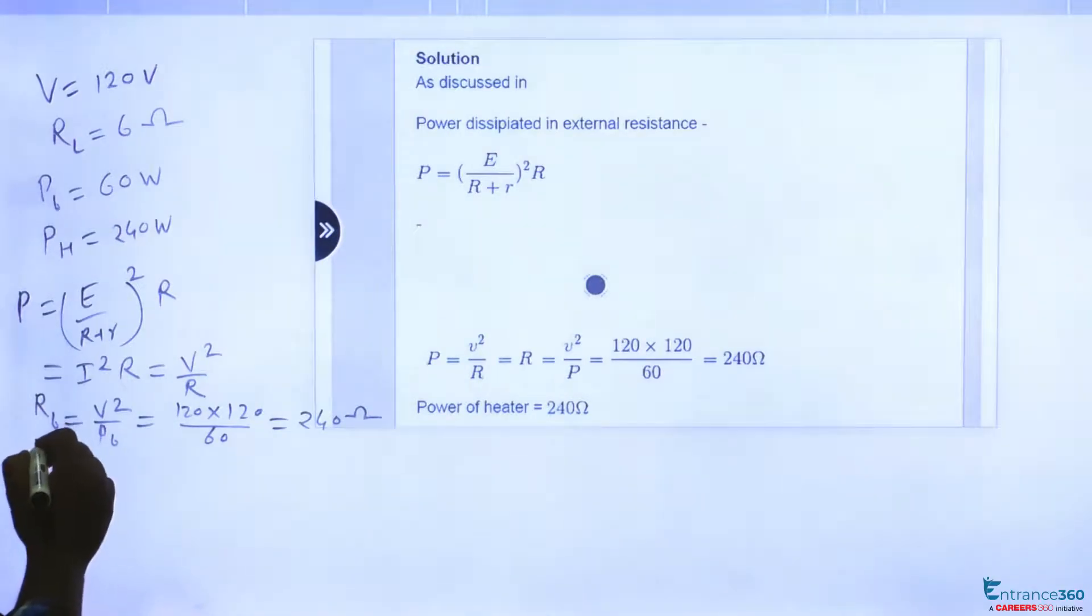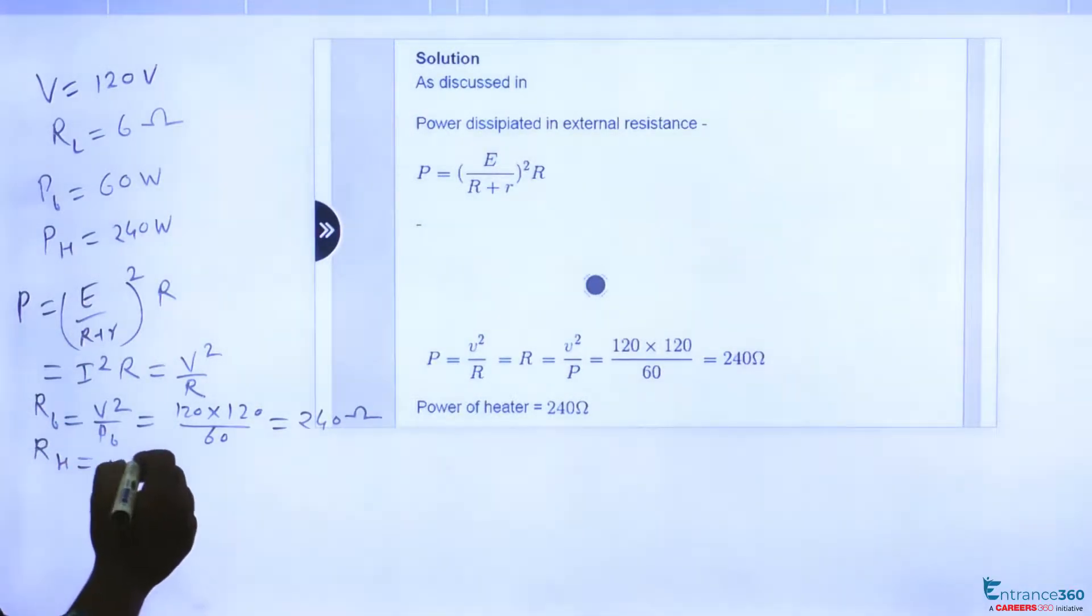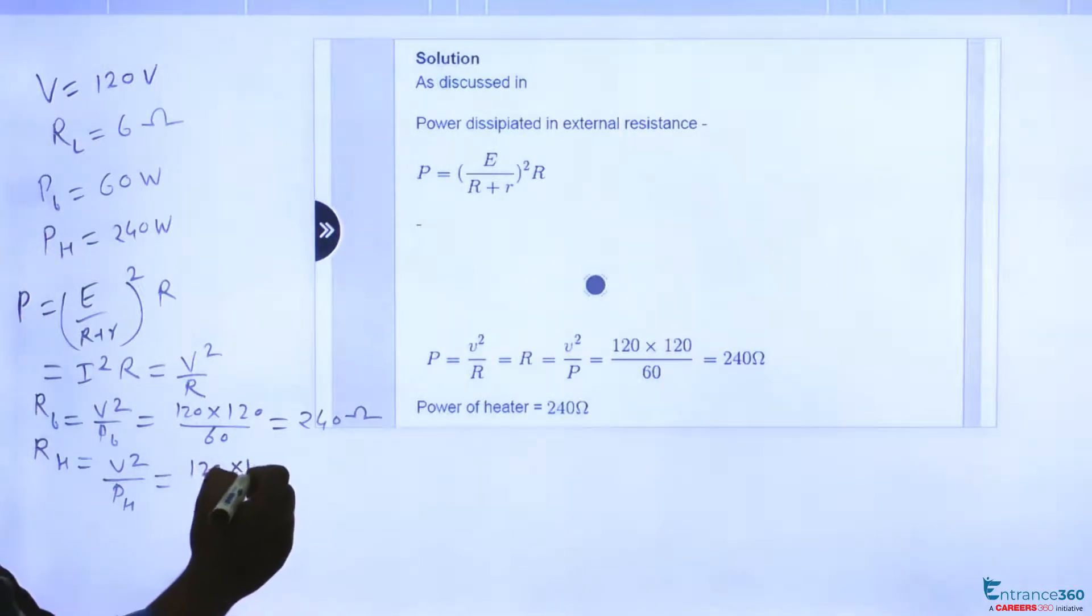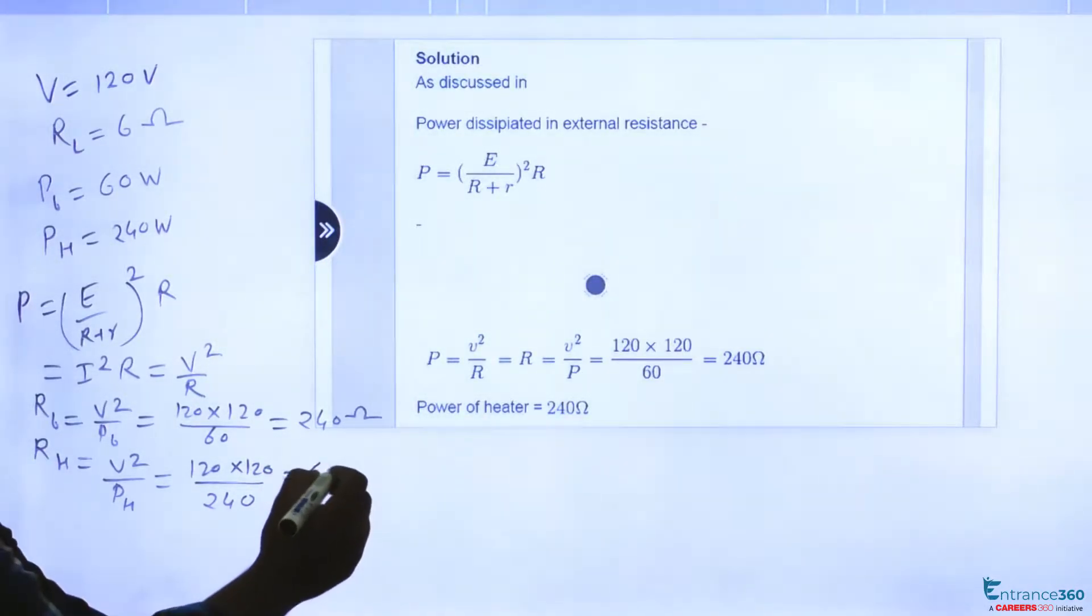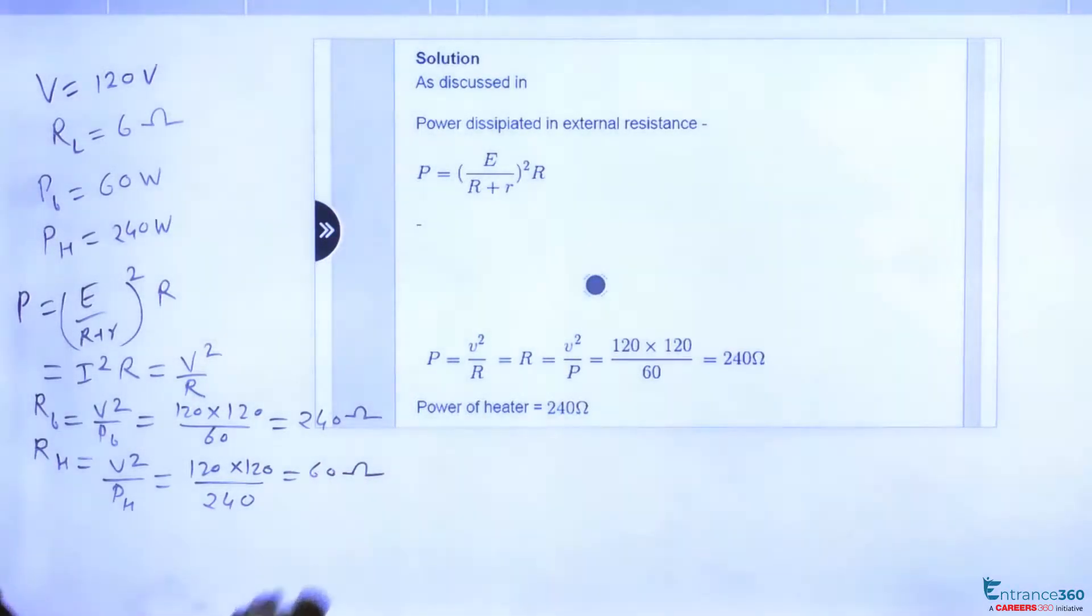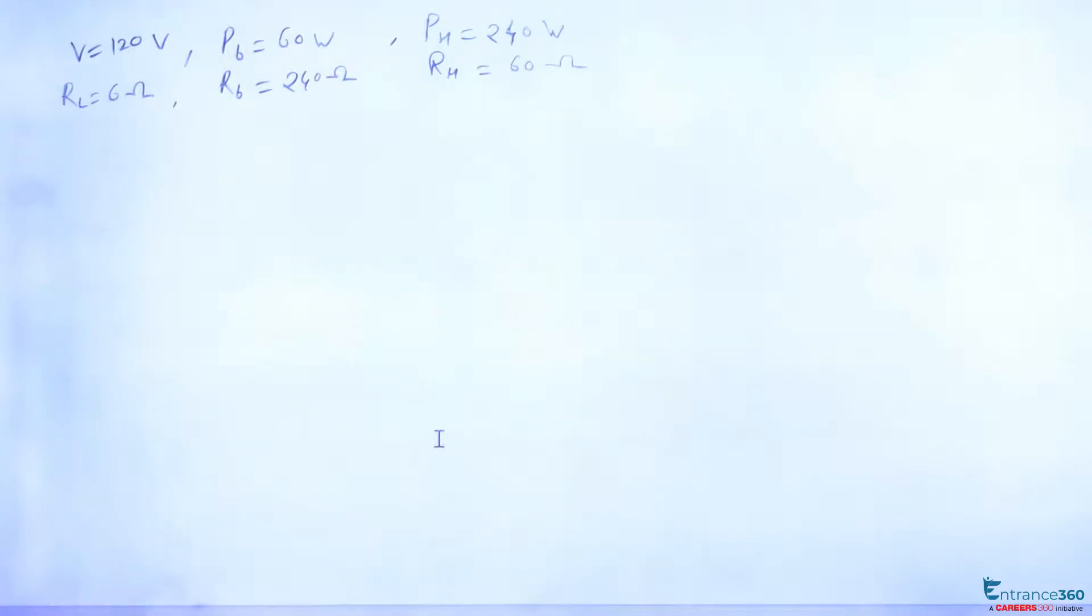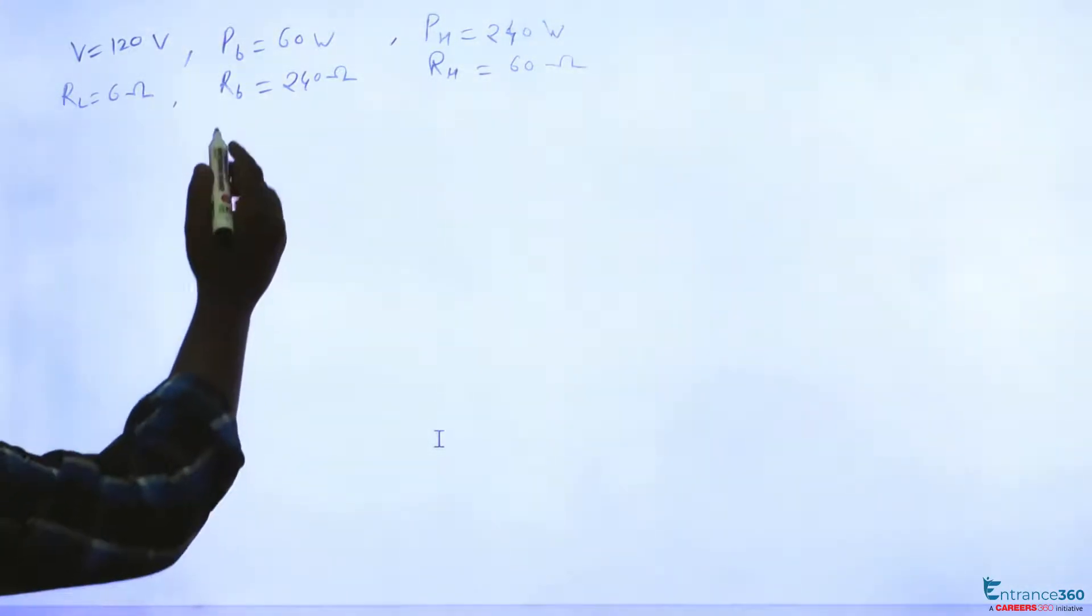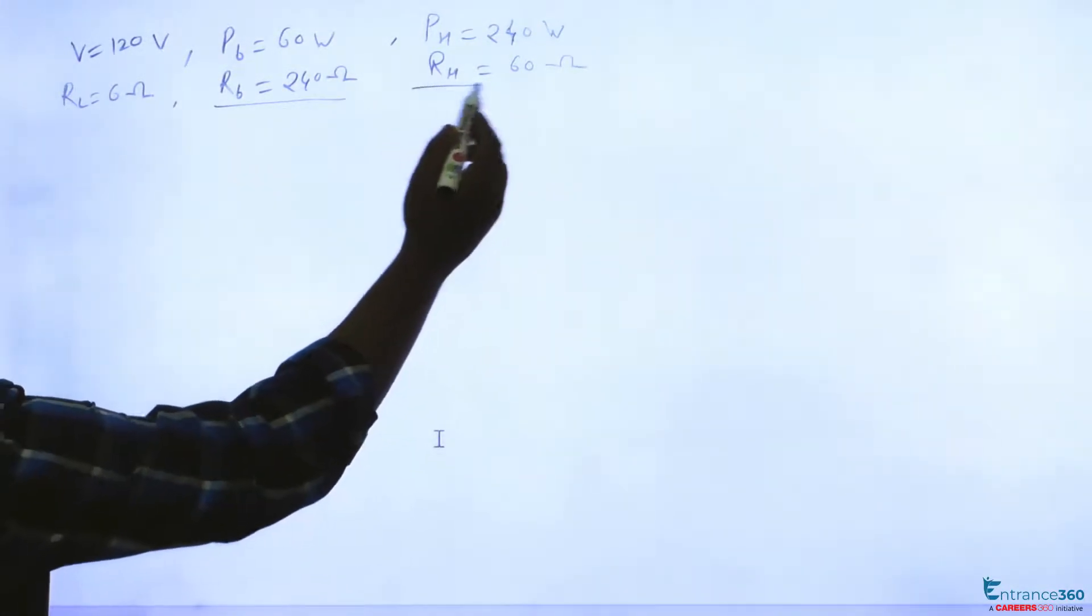And for resistance of heater we will simply find out V squared by power of heater, which is 120 into 120 upon 240, which is 60 ohm. So after solving we find out resistance of bulb and resistance of heater.